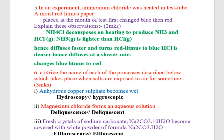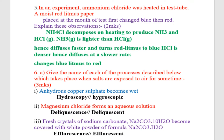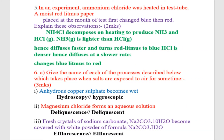Ammonium chloride decomposed on heating to produce ammonia gas and hydrogen chloride gas. Ammonia gas is lighter than hydrogen chloride gas, hence it diffuses faster and turns the red litmus paper to blue. Then hydrogen chloride gas is denser, so it diffuses at a slower rate, and it changes the blue litmus paper to red.